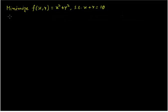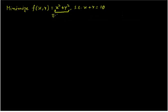Hello everyone. In this video we are going to take an example of constrained minimization and we are going to use the Lagrangian multiplier method. For that we have this function here, function f of two variables x and y, which is equal to x squared plus y squared. We are going to call this our objective function.